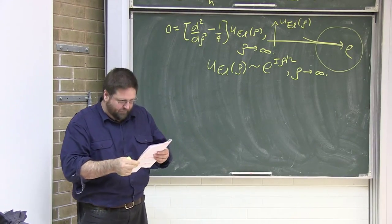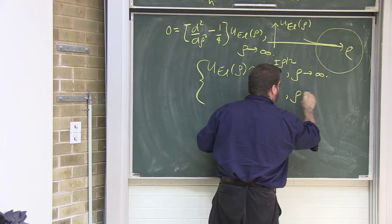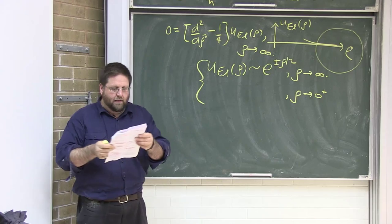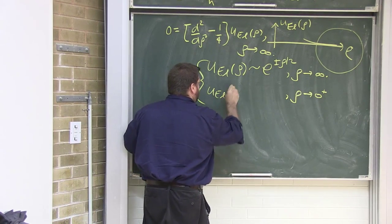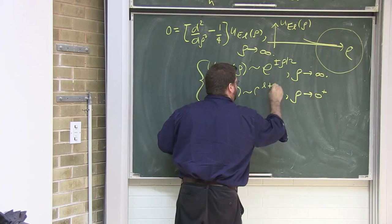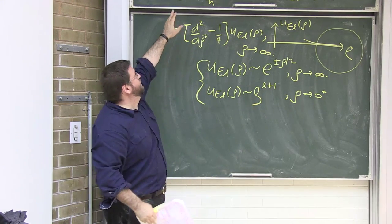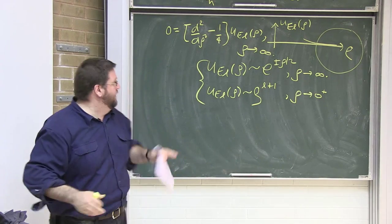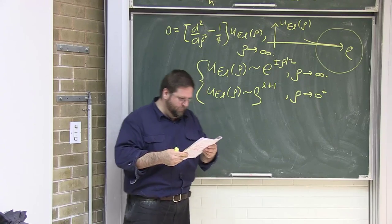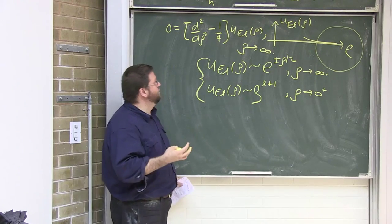From exercise 68, we also know the behavior for small ρ (ρ → 0⁺): the scaled radial wave function behaves as ρ^(l+1). So we now know how u should behave for both small and large ρ. This lets us write down equation 312 — the required form of the solution: u behaves as ρ^(l+1) for small ρ and decays as e^(−ρ/2) for large ρ.